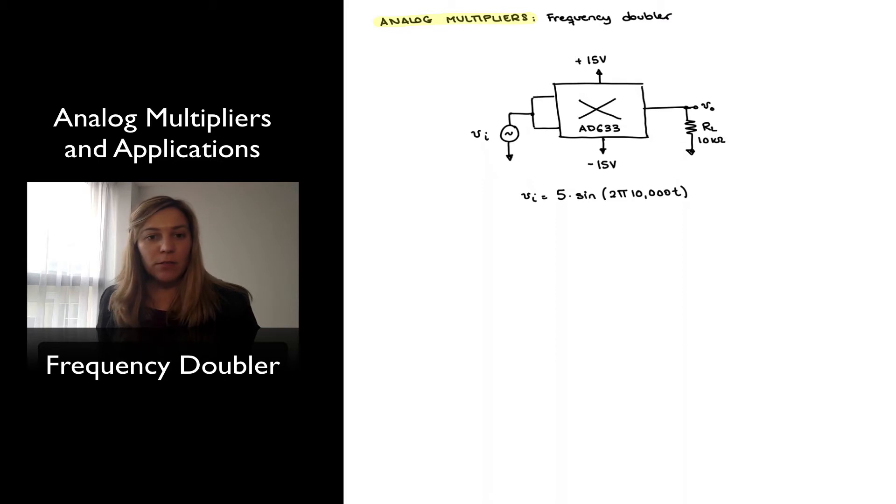A frequency doubler is a circuit that will produce an output signal of a frequency equal to twice the frequency of the input signal.